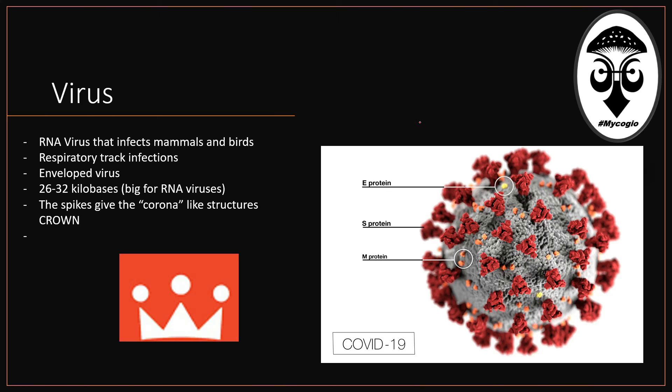Now let's talk a little bit about the virus. This is how the virus looks. It is an RNA virus that can infect mammals and birds. At the beginning of the pandemic, it was known that some pets had the virus. The illness in animals is completely different than in humans, but dogs and cats in the same household as COVID-19-infected people were also found to be infected.